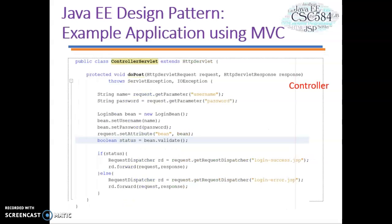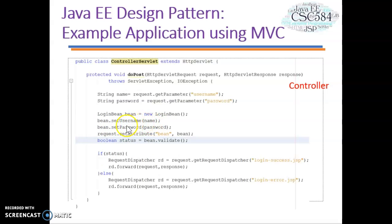Let's take a look at the first page, which is the view component. This is a form that contains username and password fields, and a submit button. This form will be submitted to the controller servlet using the POST method. In the controller component, we have a servlet class named controller servlet that extends HttpServlet. In the doPost method, we retrieve values from the form using the request.getParameter method. We then create an object using the login bean, which is the model component. We call the set and get methods on this bean to set the username retrieved from the request.getParameter method. After that, we check whether it is validated — if successful, we dispatch to login success.jsp; if it fails, we dispatch to login error.jsp.